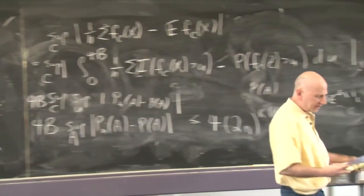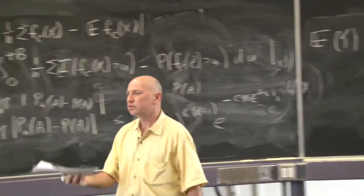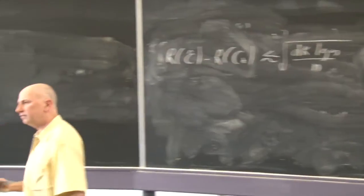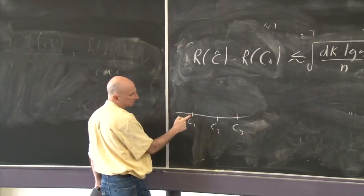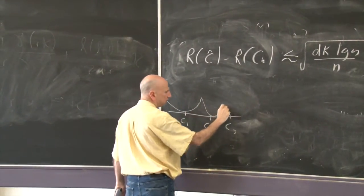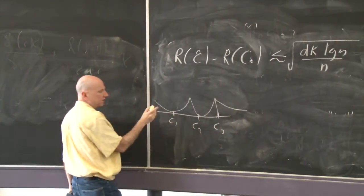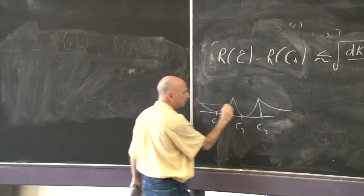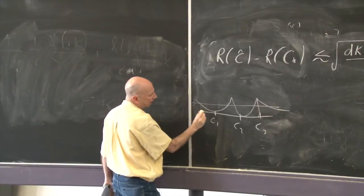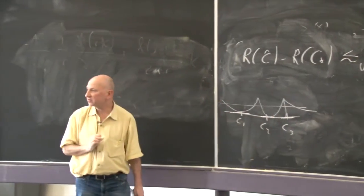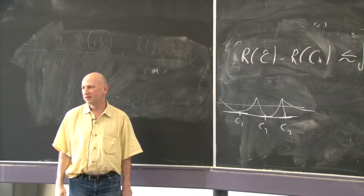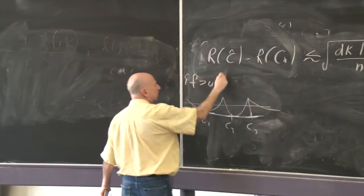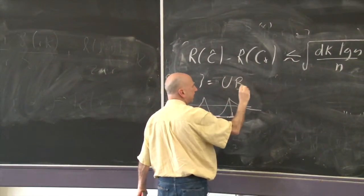There are lower bound results cited here as well. Question: why is it the union of k spheres? Because the function we're considering with centers c1, c2, c3 gives the distance to the closest center, which looks like a piecewise quadratic. We wrote it as that function being bigger than a constant. When is this function bigger than a constant? When it's outside the three spheres - here they're just intervals, but in d dimensions they'd be spheres. So the event that f is bigger than u can be written as the complement of a union of k spheres.